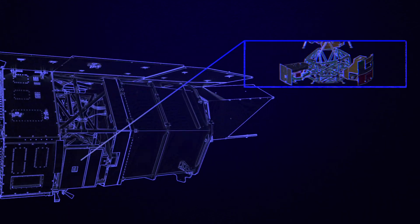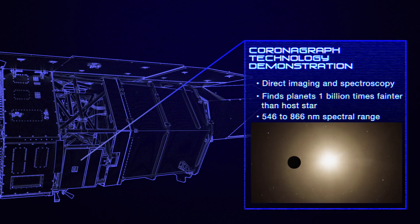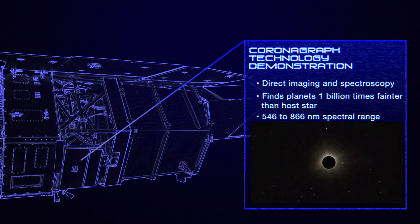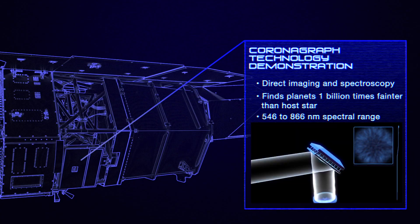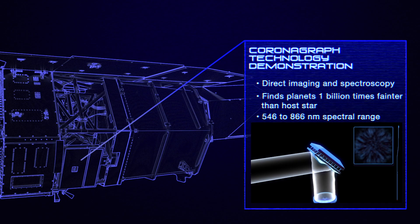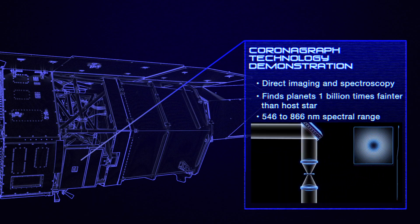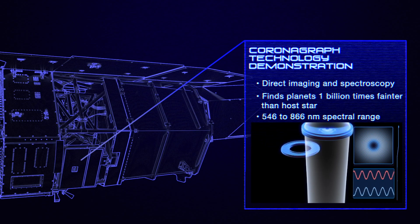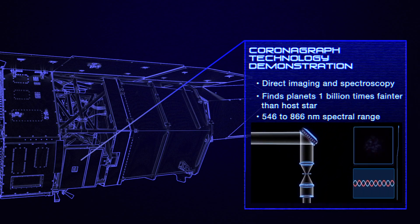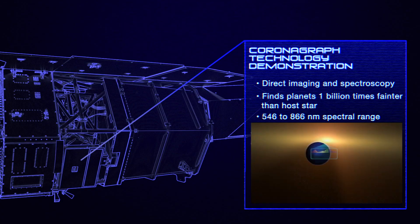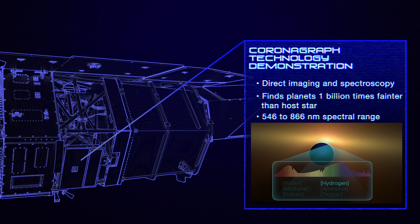Roman's other instrument is its coronagraph technology demonstration. A coronagraph blocks a star's light to capture the faint light from orbiting planets. It will be the first time a space telescope has used deformable mirrors to precisely control the incoming light, and special masks to block only the starlight. This method will enable Roman to capture direct images of distant planets, and even analyze the light that is reflected off their surfaces, allowing scientists to learn about their composition and atmospheres.